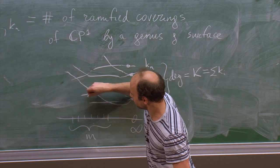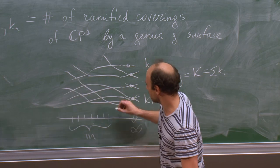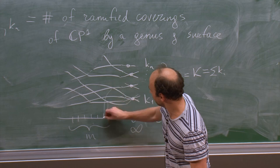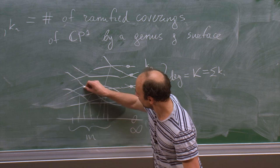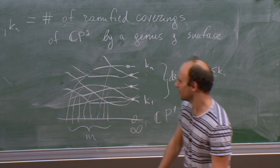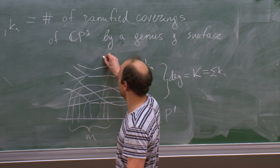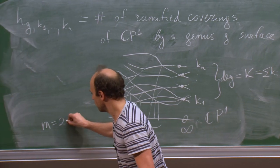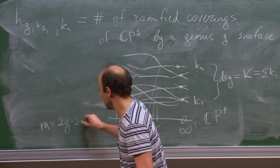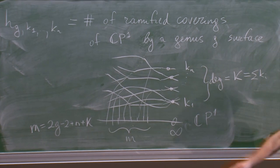All these are simple ramification points, and their images are all fixed in the target. You can compute the Euler characteristic and check that M, this number M, should equal 2g − 2 + n + K. If you want this surface to be of genus g, that's the number of simple branch points you have to fix.